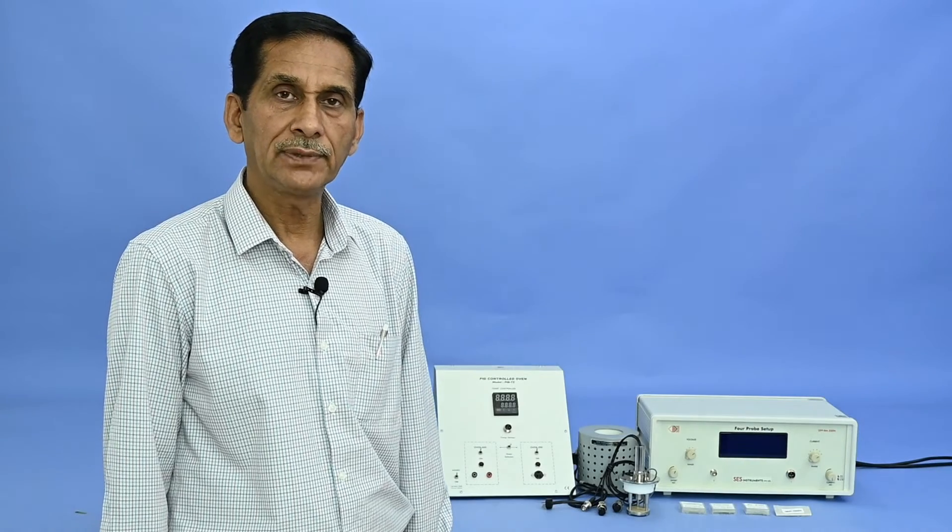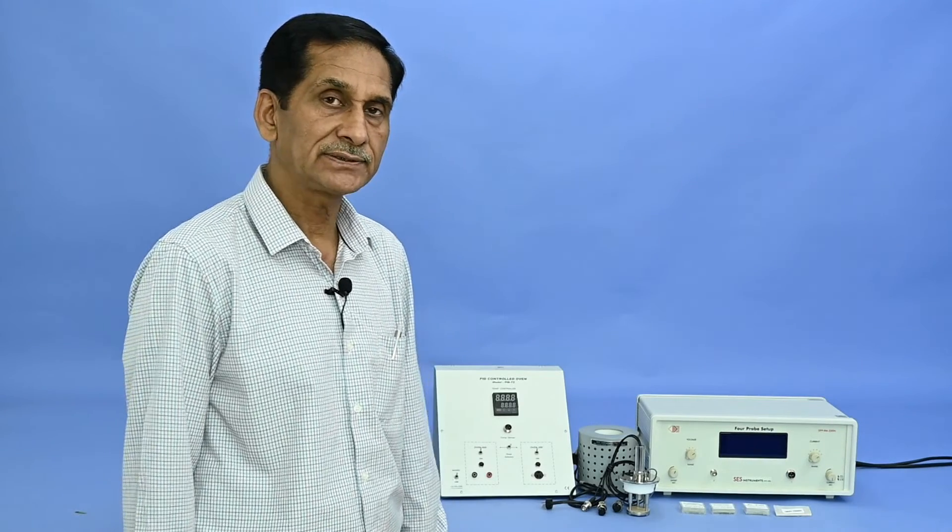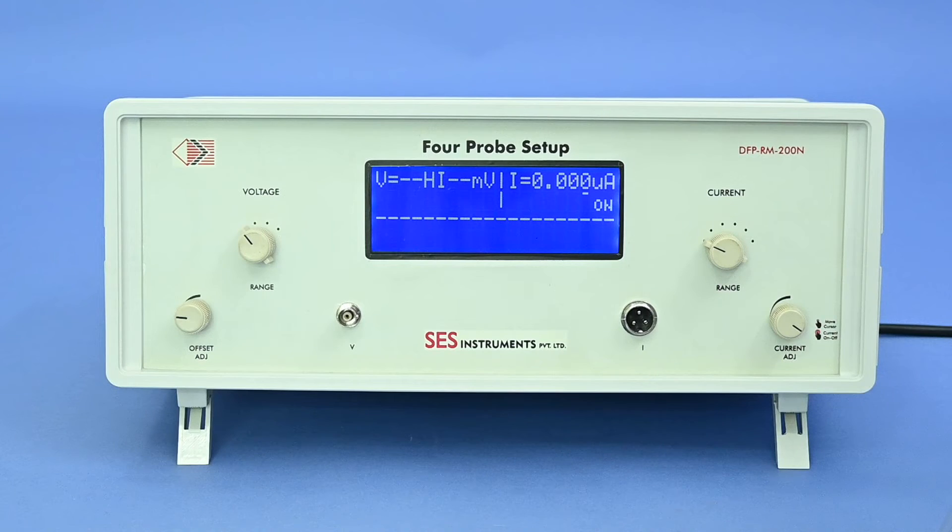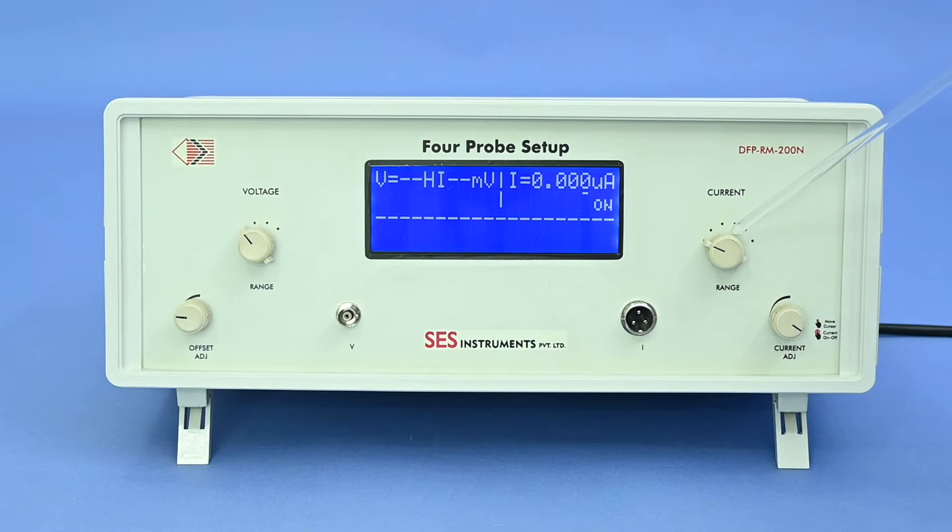When you unpack the carton box, we will get the different parts of the experiment. Four probe setup controller unit, built-in constant current source and voltmeter unit. Current source range works in six decade steps: 2 microamps, 20 microamps, 200 microamps, 2 milliamps, 20 milliamps, and 200 milliamps.